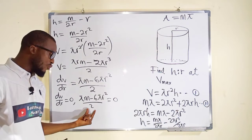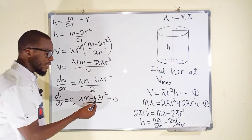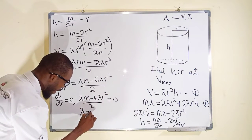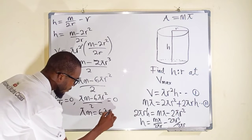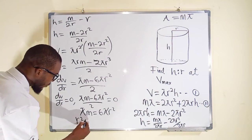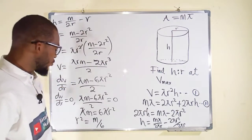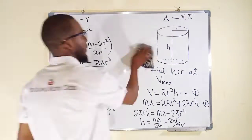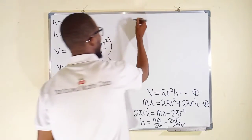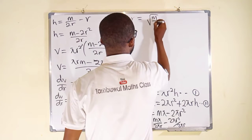Multiplying both sides by 2 clears the fraction. Taking negative 6 pi r squared to the right side, it becomes positive, giving pi M equals 6 pi r squared. Pi cancels pi, so r squared equals M over 6. Therefore r equals the square root of M over 6.